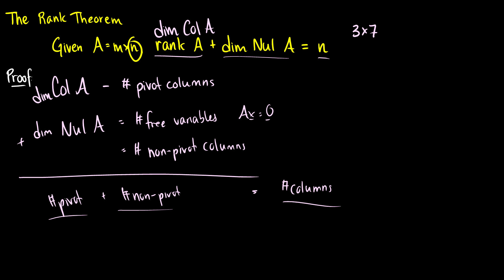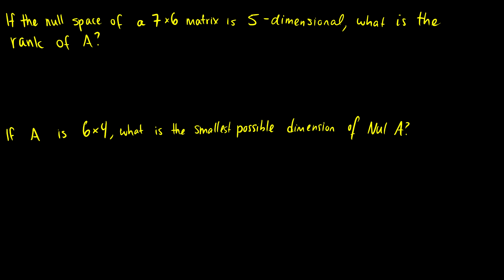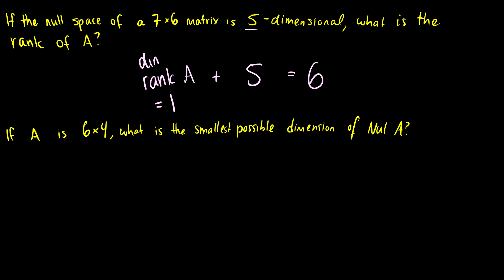Let's test your understanding. If the null space of a 7 by 6 matrix is five-dimensional, what is the rank of A? There are six columns total, and the dimension of the null space is 5. So rank(A) plus 5 equals 6, which means the rank of A must equal 1. If we have five free variables, then we're going to have one pivot column.